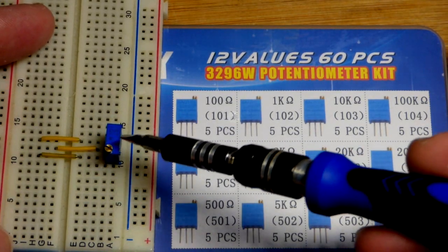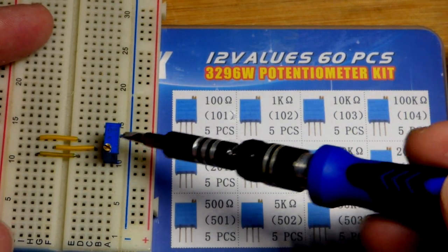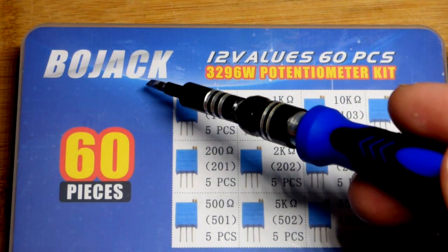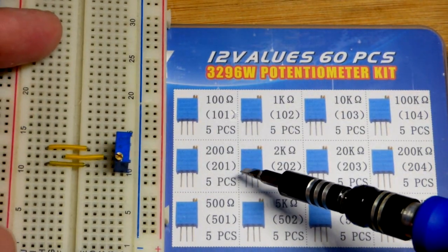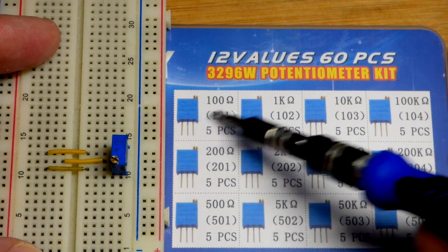Now in this video we're just going to take a quick look at this multi-turn trim pot I got. I got it out of this Bojack kit right there, ordered it from Amazon.